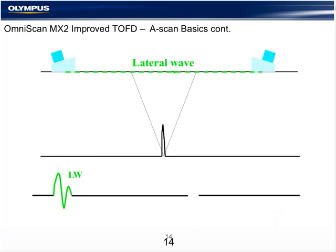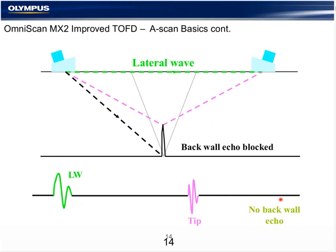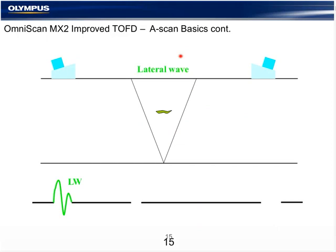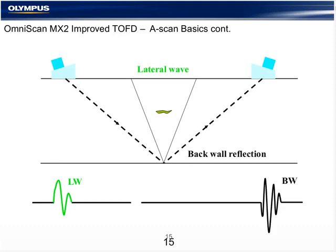It's exactly the opposite for a surface-breaking flaw on the ID. The lateral wave is present, and the first next signal we see is the upper tip. We will either see a distorted back wall or no back wall, depending on the severity of the flaw. In an interpass non-fusion, which is very common in weld inspection but not typically detected by RT or pulse echo, we'll see the lateral wave, the back wall, a small indication for the flaw echo, but no measurable significant depth and height.